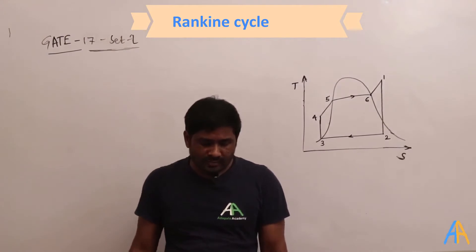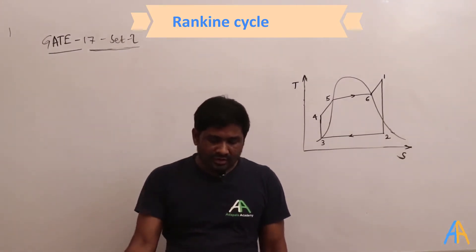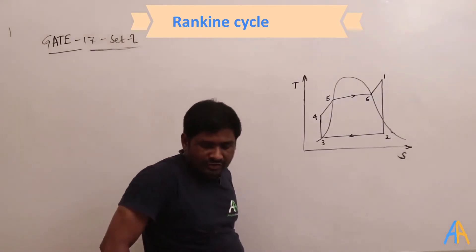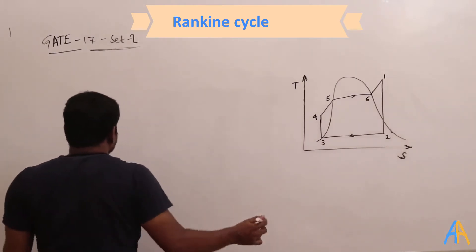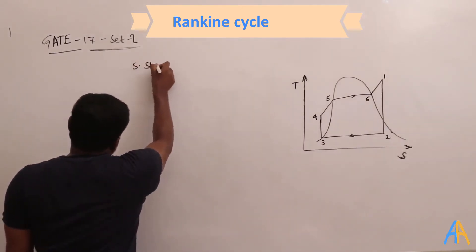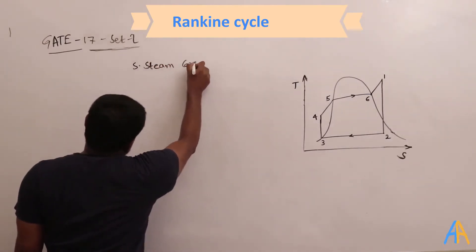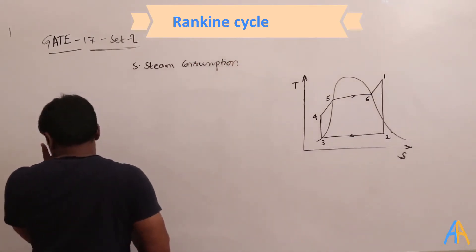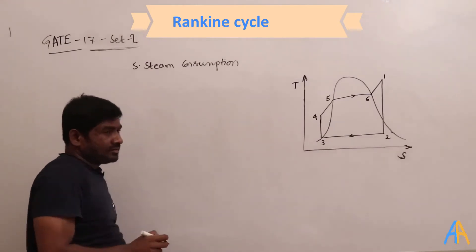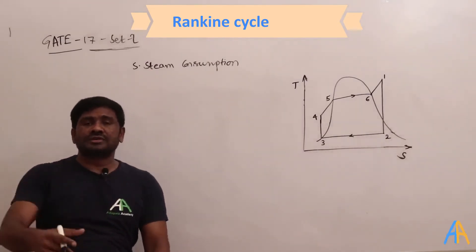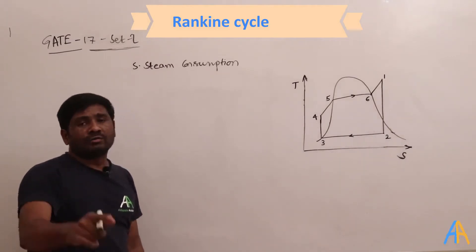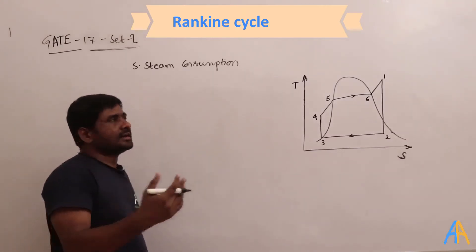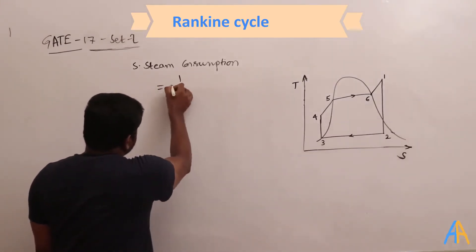What we need to find here is the specific steam consumption. The definition of specific steam consumption is the rate of steam required to produce one kilowatt of work output. The formula is: specific steam consumption = 1 divided by W_net.